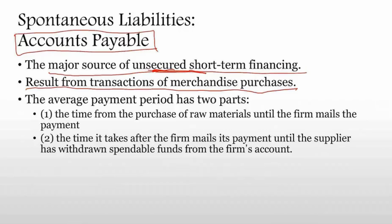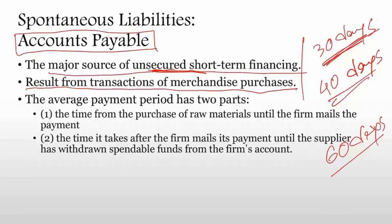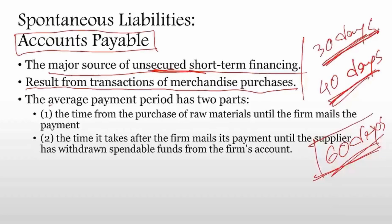You can use that money for your business for a short period of time. If you pay the supplier after 30 days, you have financing for 30 days. If you pay after 40 days, you have financing for 40 days. If you pay after 60 days, you have a financing period of 60 days. So which is better — paying after 30, 40, or 60 days? The more time you utilize other people's money, the more you can do your business.